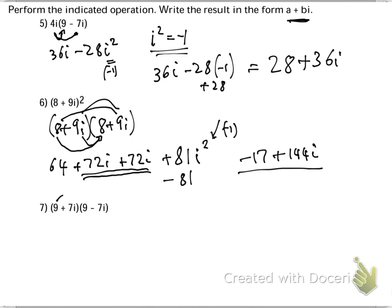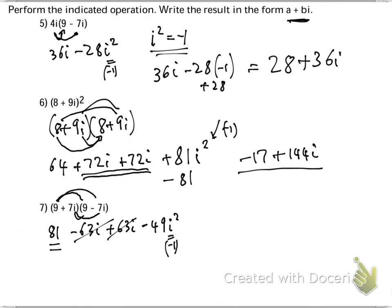9 times 9 is 81. The outer is negative 63i, the inner is positive 63i. And the last is negative 49i squared. Now look at what's going to happen here — those will cancel. So what I'm left with is 81 minus 49i squared. Remember that i squared is negative 1, so this will give me 81 plus 49, which equals 130. So if I have to write it like this, it's 130 plus 0i.